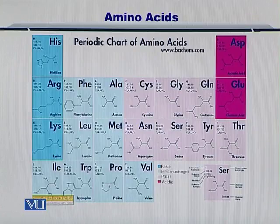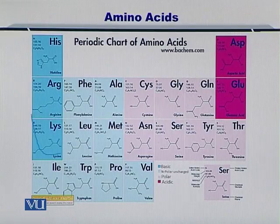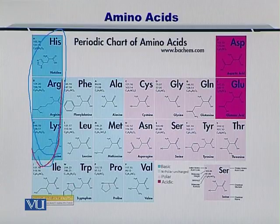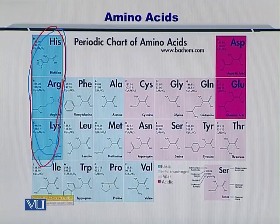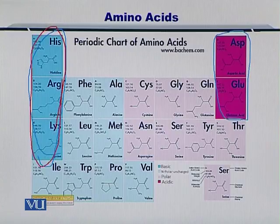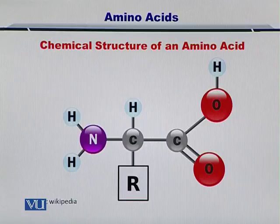As you can see in this periodic chart of amino acids, the basic amino acids or the amino acids with basic properties are listed on one side, and the acidic ones are listed on the other side. The rest of them have partially acidic and partially basic properties.